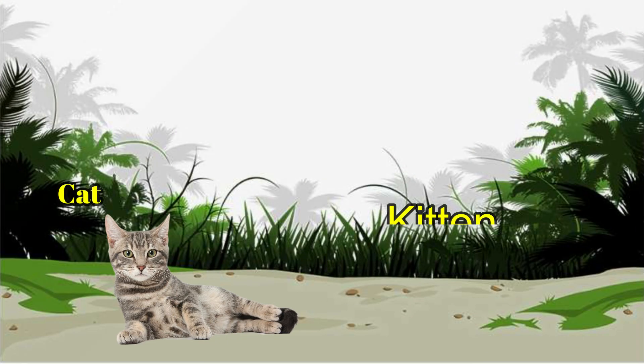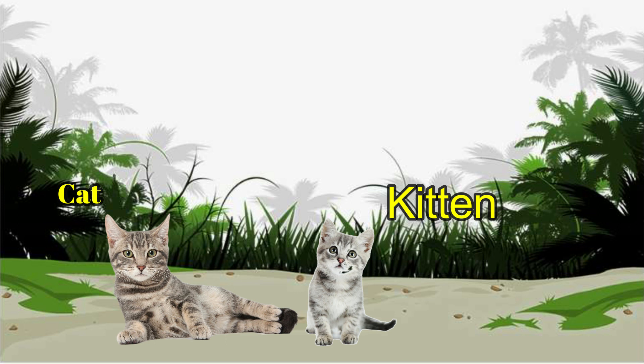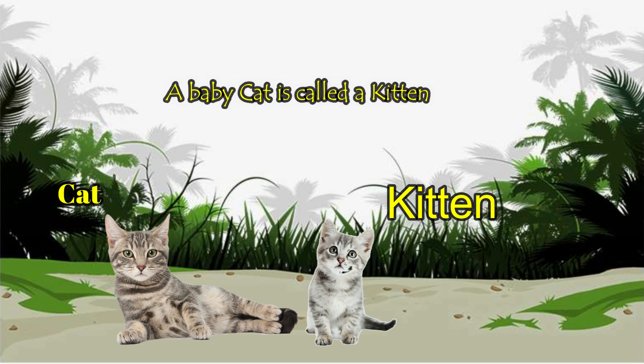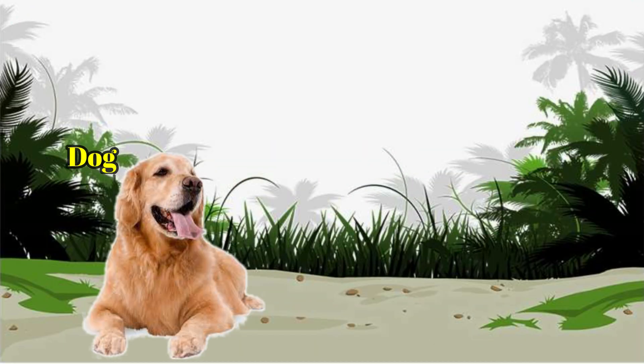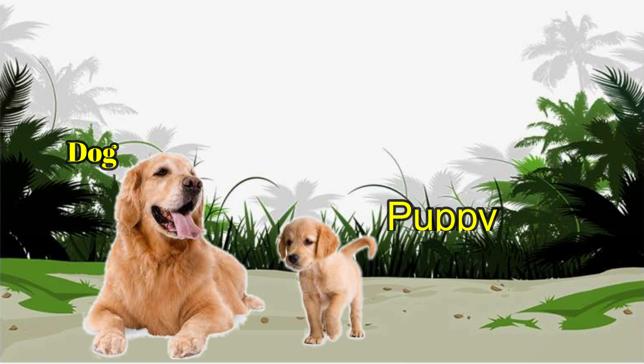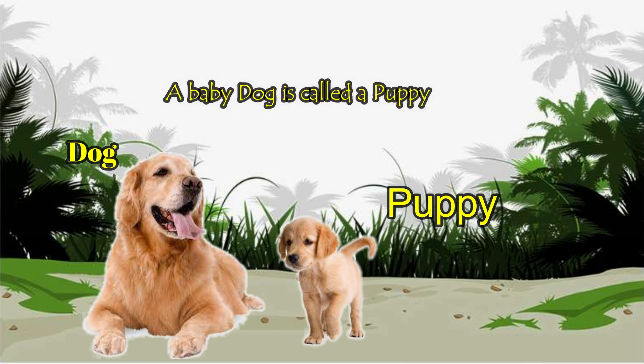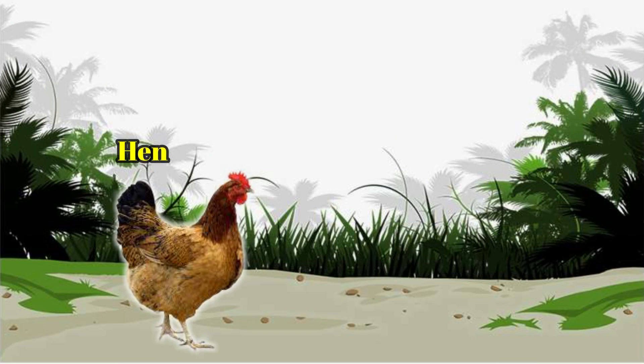Cat. Kitten. A baby cat is called a kitten. Dog. Puppy. A baby dog is called a puppy.